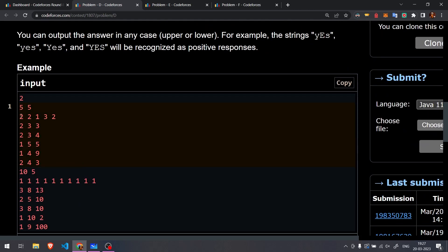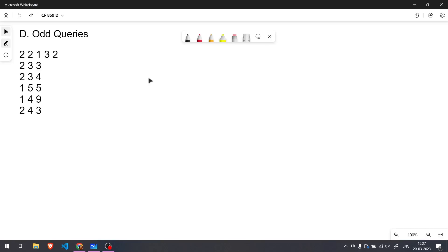So for example, let's take this example and understand how to do this problem. So over here, we are given the example of 2, 2, 1, 3 and 2 and we have to perform these queries, basically 5 queries.